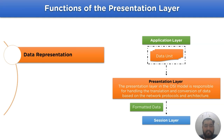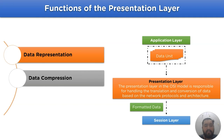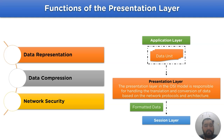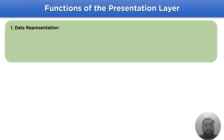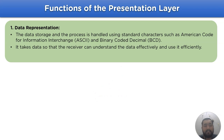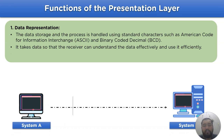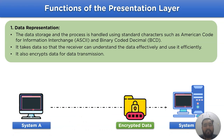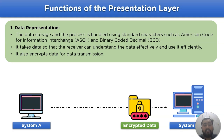The functions of the presentation layer are: data representation, data compression, and network security. The first function is data representation. Data storage and processing is handled by the American Code for Information Interchange and Binary Coded Decimal in the presentation layer. It formats data so that the receiver can understand and use it efficiently. It is also responsible for encrypting data for data transmission.